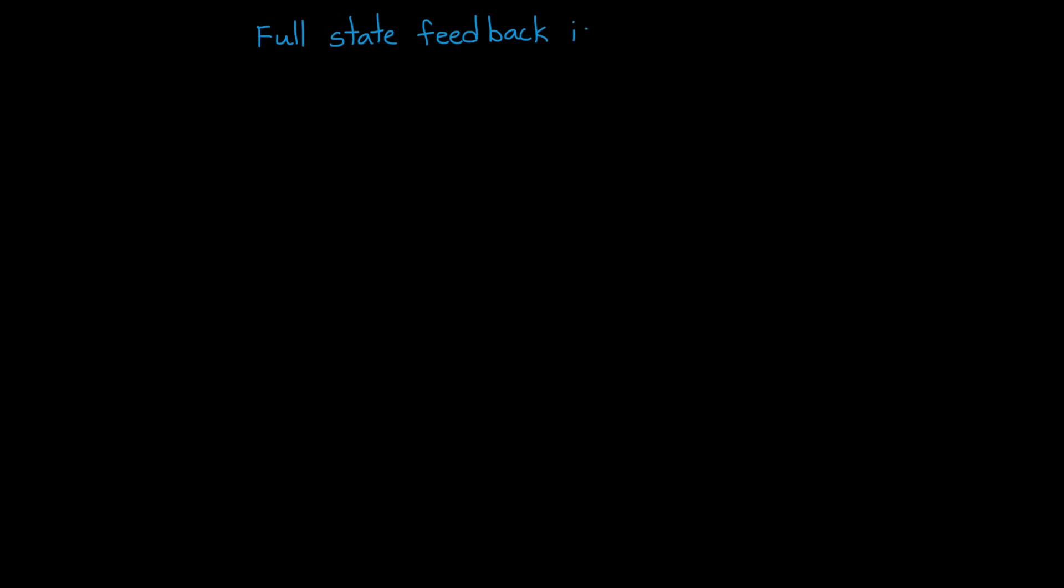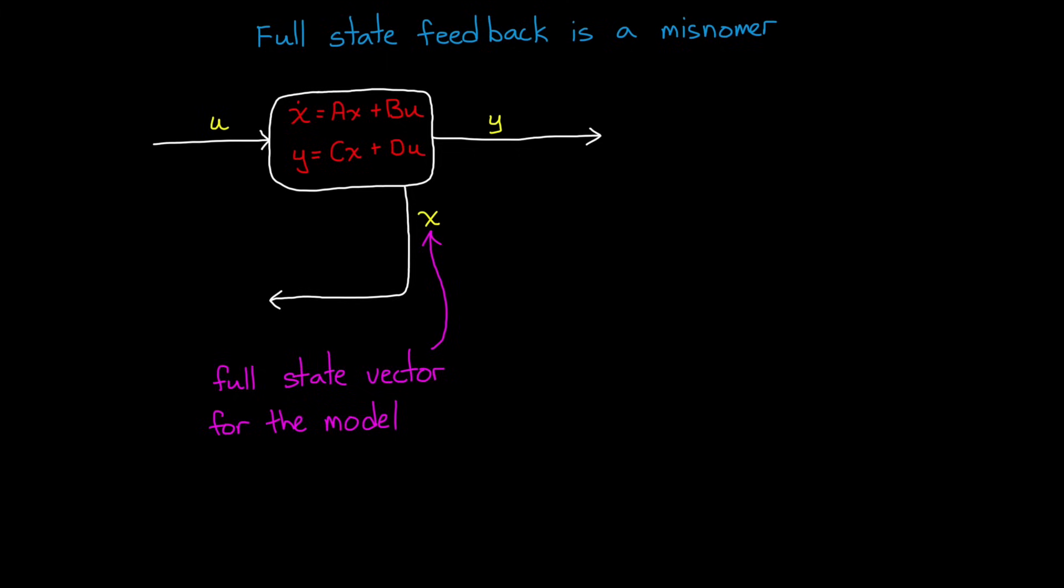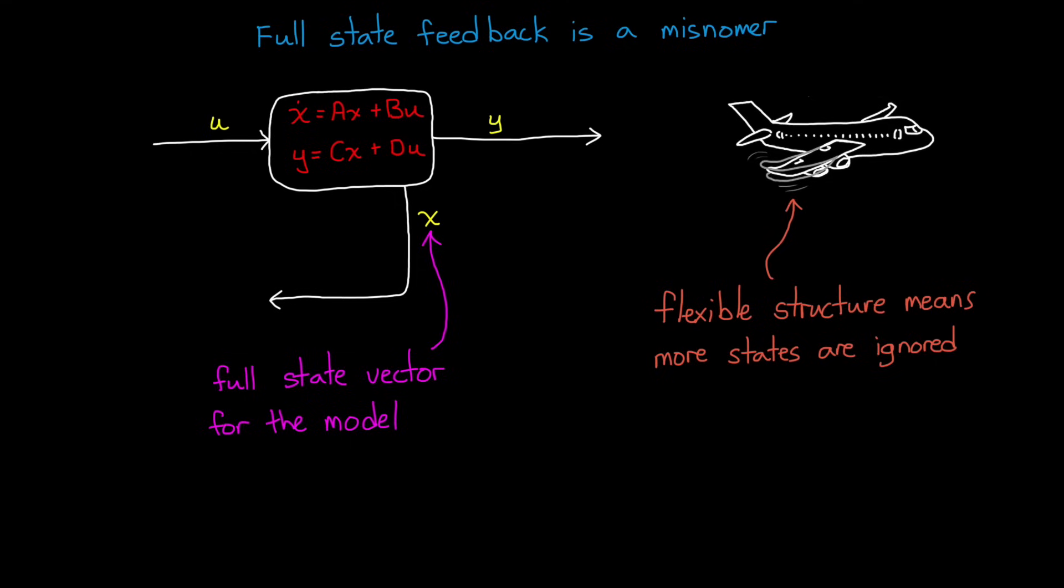Full state feedback is a bit of a misnomer. You are feeding back every state in your mathematical model, but you don't and can't feed back every state in a real system. For just one example, at some level all mechanical hardware is flexible, which means additional states, but you may choose to ignore those states in your model and develop your feedback controller assuming a rigid system. The important part is that you feed back all critical states to your design, so that your controller will still work on the real hardware.